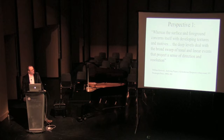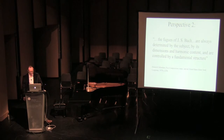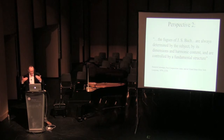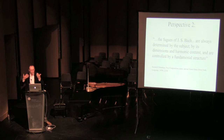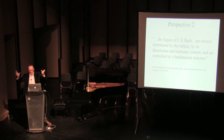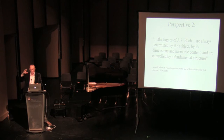Perspective 2 comes from Heinrich Schenker himself on analyzing fugue. He says: 'the fugues of J.S. Bach are always determined by the subject, by its dimensions and harmonic content, and are controlled by a fundamental structure.' Schenker is actually having it both ways — starting by talking about the fugal subject, the melody heard at the opening of the fugue, saying it creates the entire composition. But he's also saying it's controlled by the fundamental structure, his prototype. So he's sitting on the fence, looking at both bottom-up and top-down perspectives.